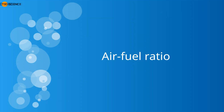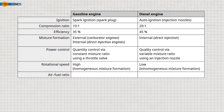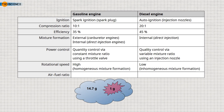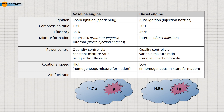In both gasoline and diesel engines, a certain air-fuel ratio is required for the fuel-air mixture to be combustible and for combustion to be as complete as possible. For example, 1 gram of gasoline requires 14.7 grams of air for complete combustion, while 1 gram of diesel requires 14.5 grams of air. Combustion is inefficient if there is too little or too much air, resulting in the formation of pollutants.